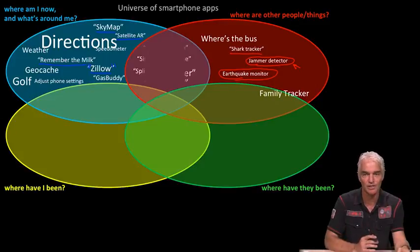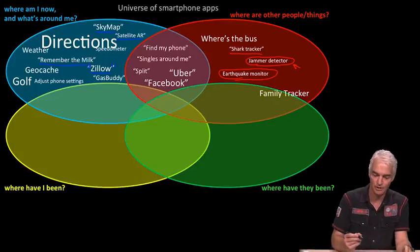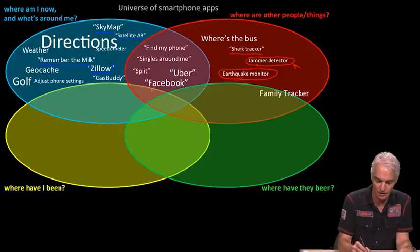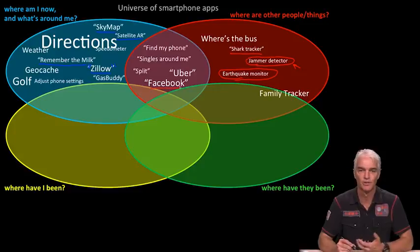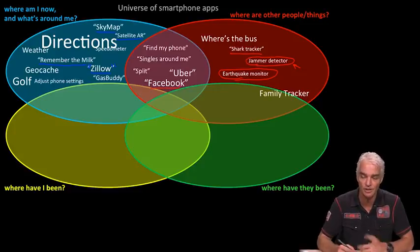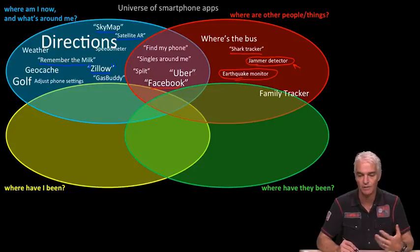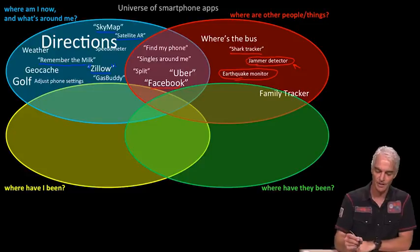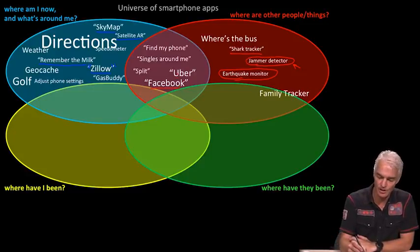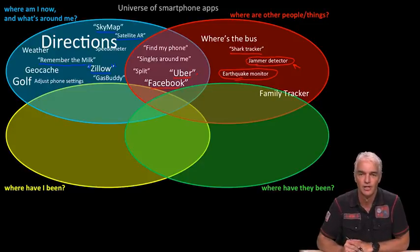Where 'where am I' and 'where are others' come together is where you get really interesting apps. Facebook is one everyone knows — GPS in Facebook lets you see where your friends are, post your location, and see which friends have posted theirs. Facebook has quite a lot of features to help you literally find your friends in your vicinity.